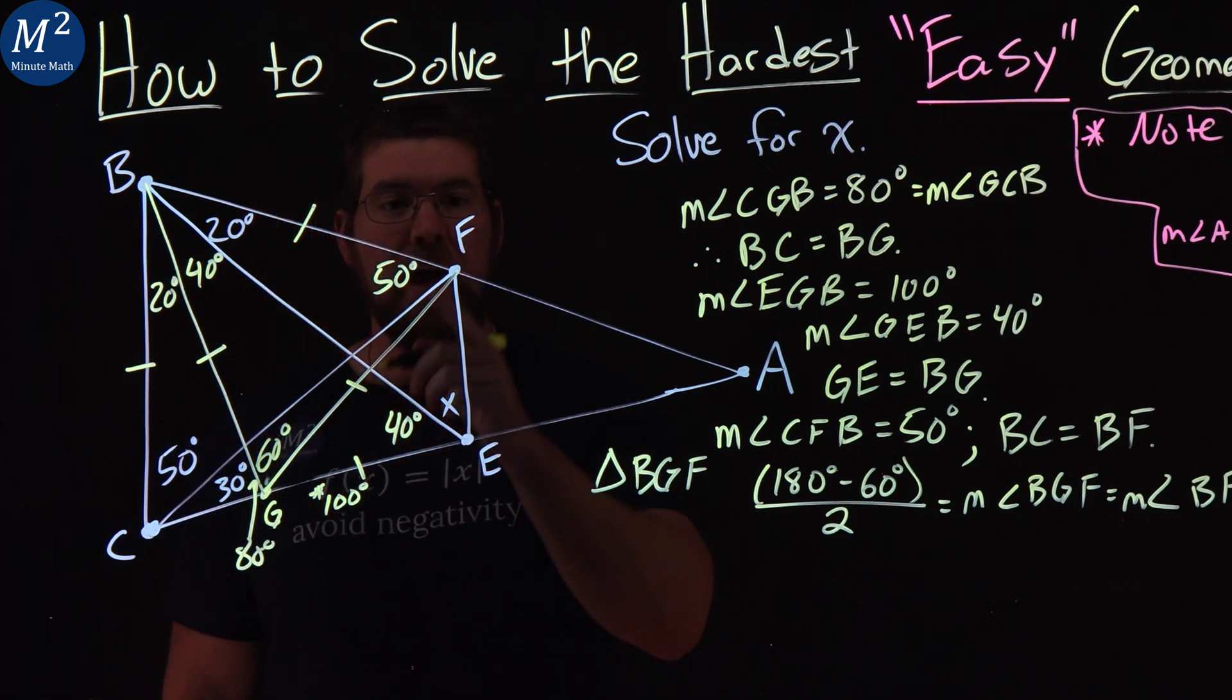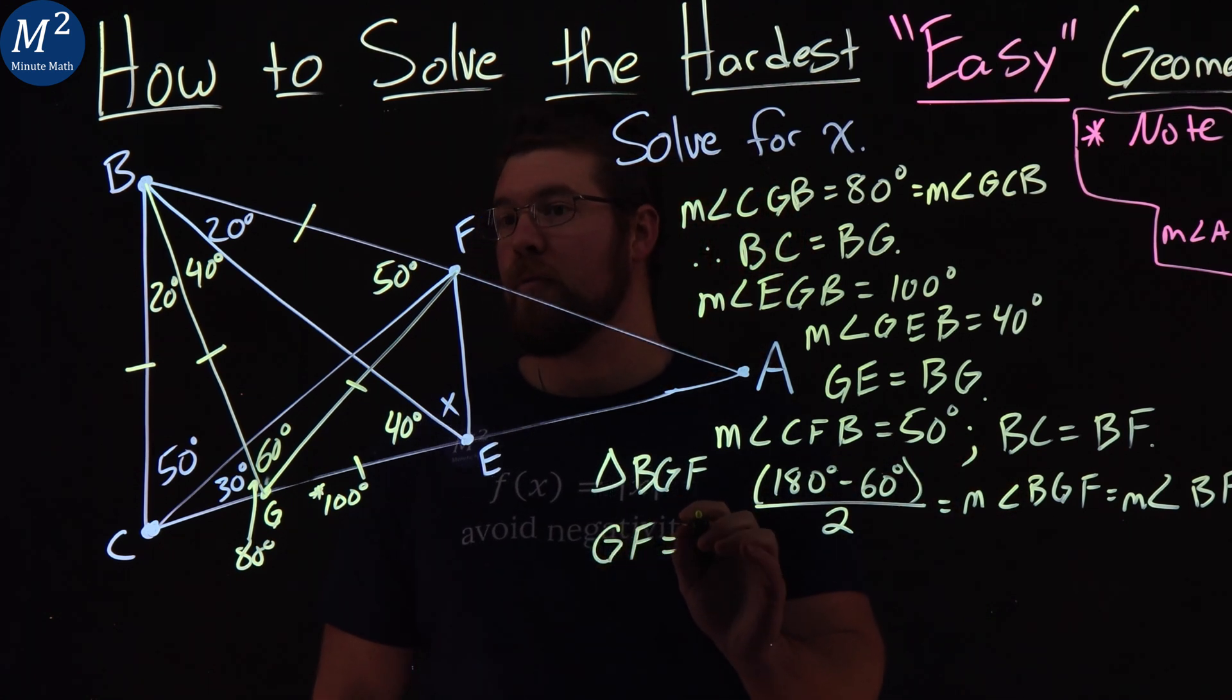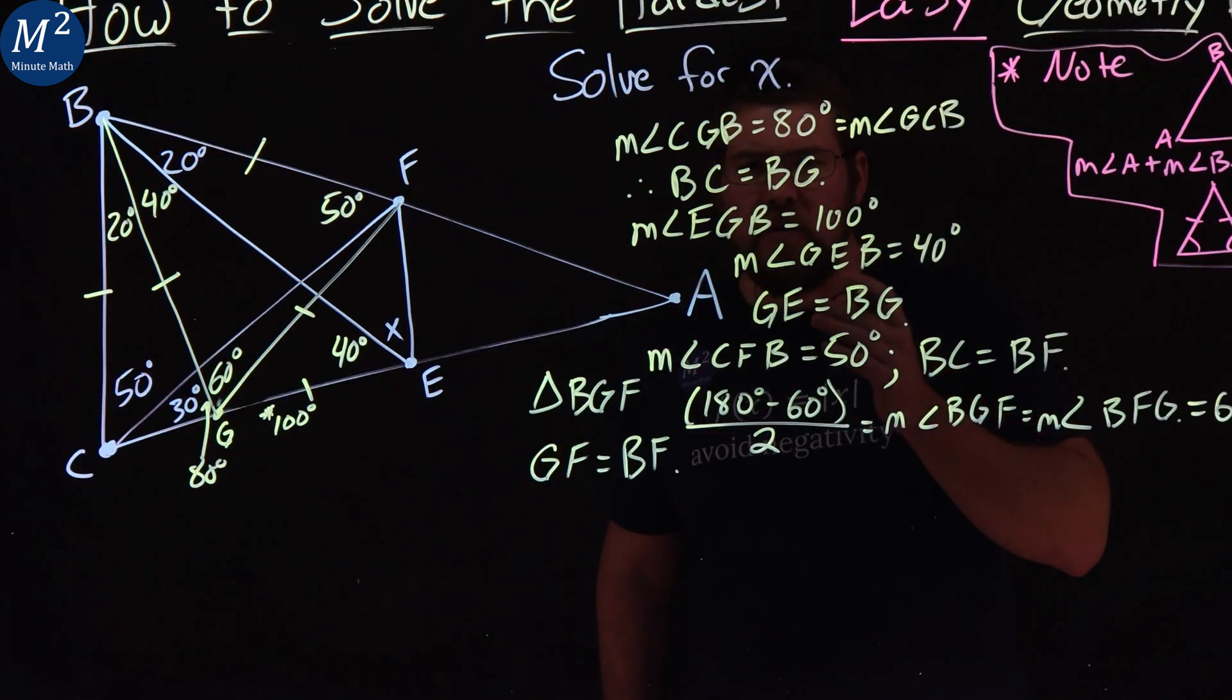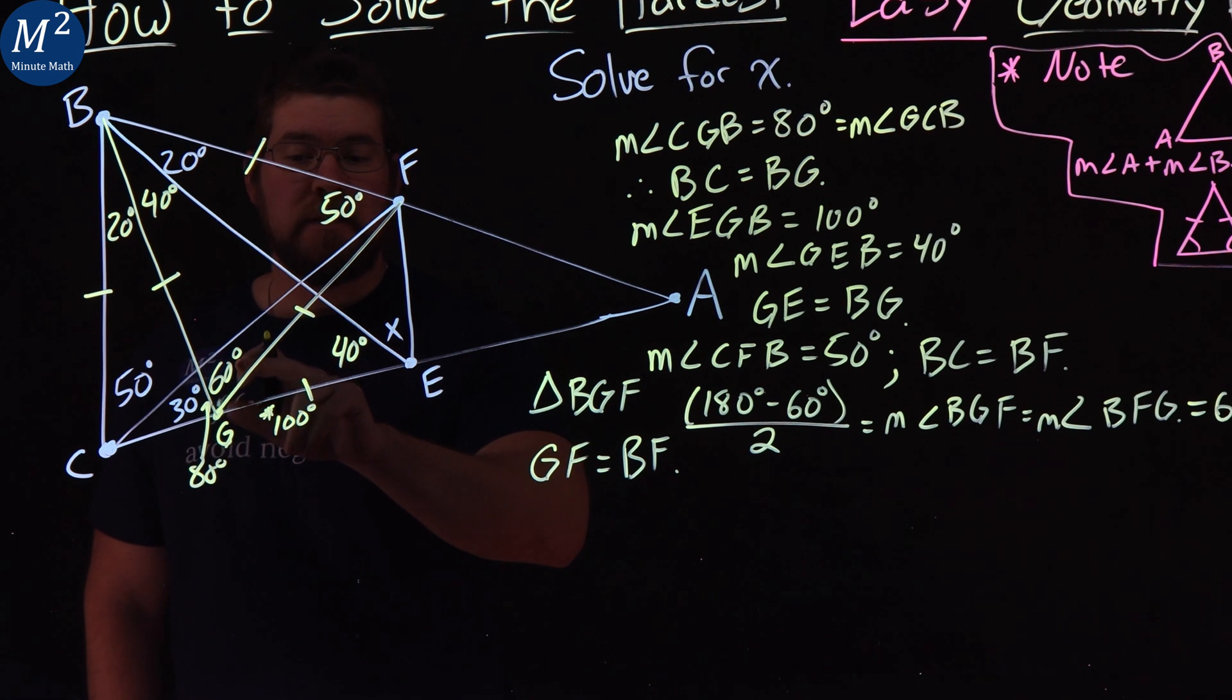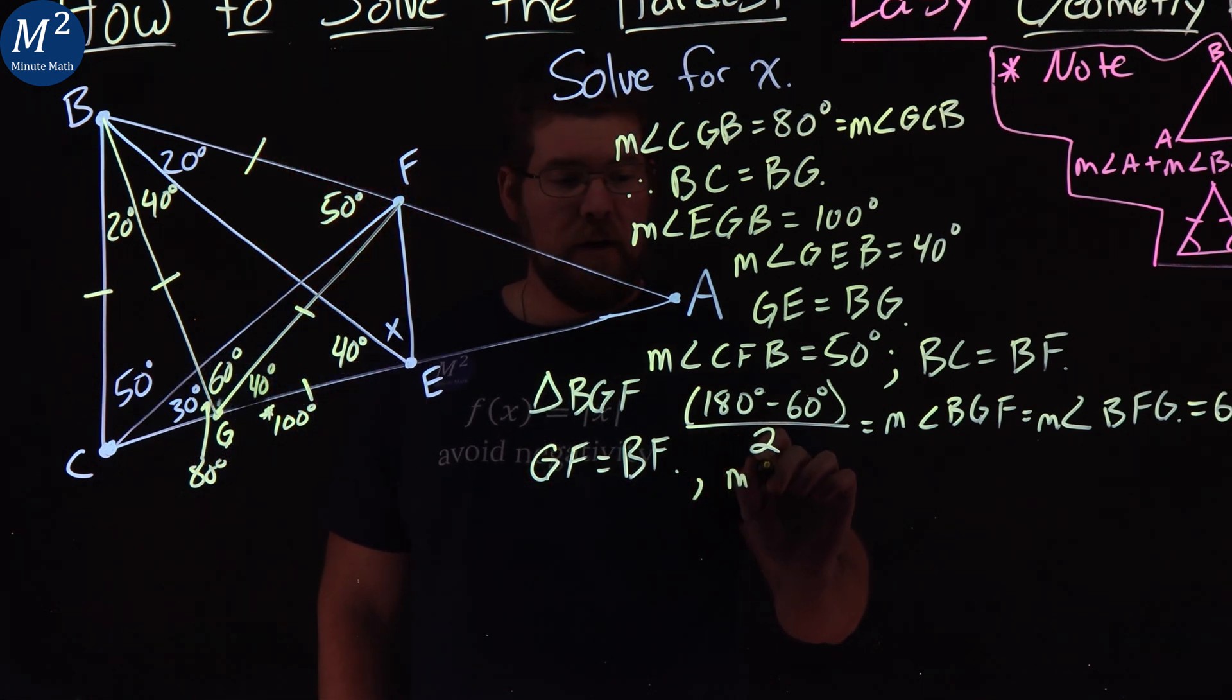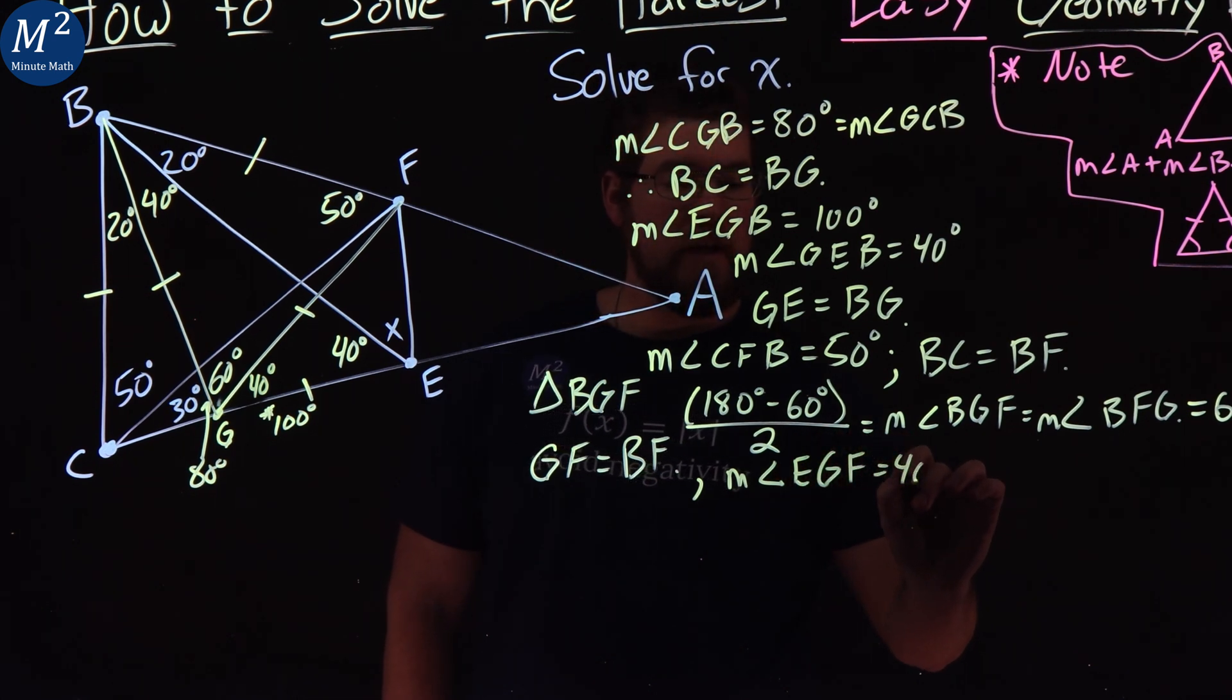But if it's equilateral, all being 60 degrees, this side length GF is equal to side length, let's say BF to label it here. So now remember when I said that this right here, BGF was 60 degrees, but together that made 100, meaning that inside here we have to have 40 degrees. And so the measurement of angle EGF is equal to 40 degrees.